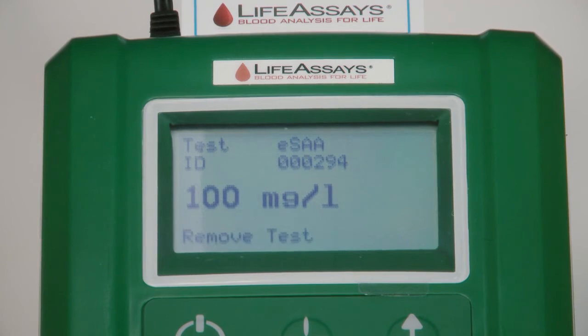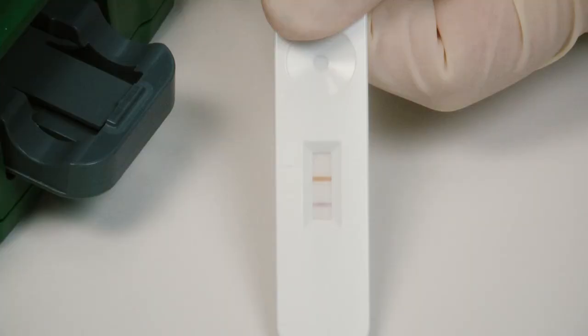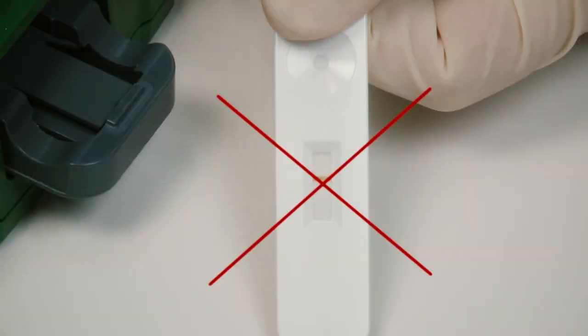Write down the result. Remove the test strip and check the control line visually. A pink control line in the window area next to the letter C should be visible. If there is no control line, the test result is invalid and should be discarded.